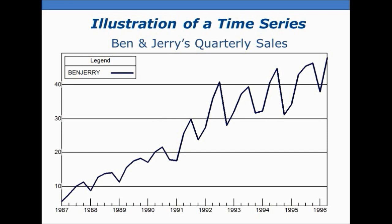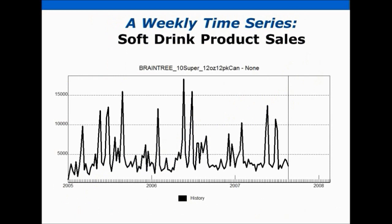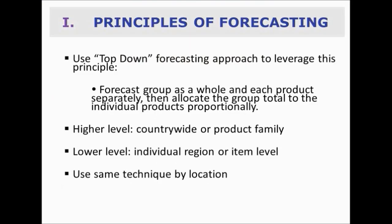Here is Ben and Jerry's quarterly sales in total. Yes, there's some jaggedness, some up and down, but overall there's an upward trend — we could probably forecast that. Let's disaggregate just a little bit: here we have diamond ring sales, monthly time series — you can see it's much more irregular. And next we have soft ring product sales, weekly, no less. You can see it is very noisy, so it becomes much more difficult to forecast.